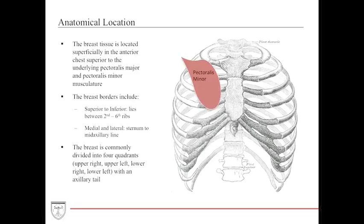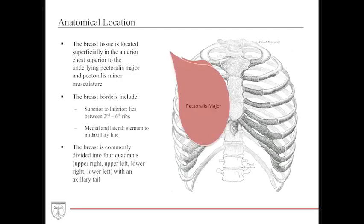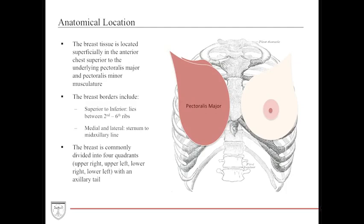The breasts are located superficially along the anterior chest, above the pectoralis minor and above the pectoralis major. The breast spans from ribs two down to ribs six; the medial border is the sternum and the lateral border is the mid axillary line. The breast is commonly divided into four quadrants — upper right, upper left, lower right, and lower left — with the axillary tail reaching up into the armpit.